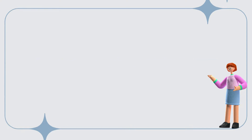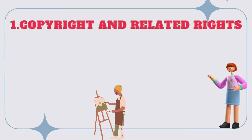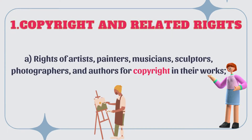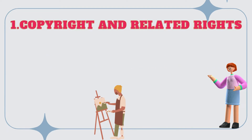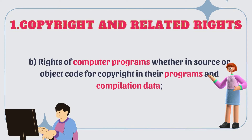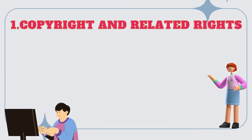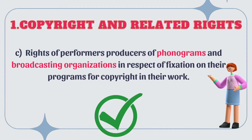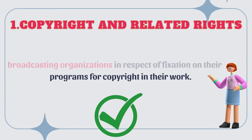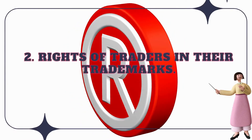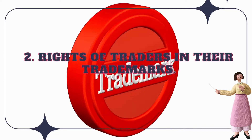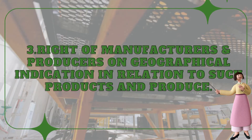Intellectual property rights are defined by TRIPS as: number one, copyright and related rights — rights of artists, painters, musicians, sculptors, photographers, and authors for copyright in their works; rights of computer programs whether in source or object code; rights of performers, producers of phonograms, and broadcasting organizations in respect of fixation in their programs. Number two, rights of traders in their trademarks.